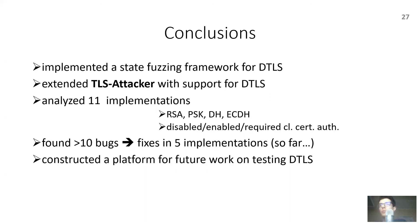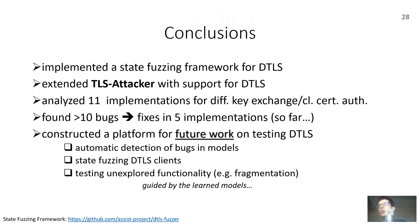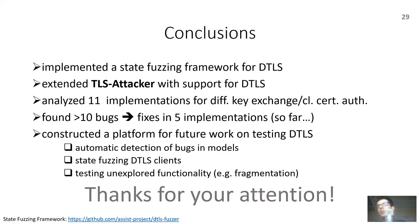We believe the software built as part of this work can serve as a platform for future research. Several directions are possible: one is making bug detection automatic, as all bugs reported here were found manually — a time-consuming process requiring protocol knowledge. Another direction is state fuzzing DTLS clients, since we only tested DTLS servers. A final direction would be analyzing functionalities not explored by our approach, such as fragmentation, potentially leveraging the models generated in this work. Thank you for your attention.